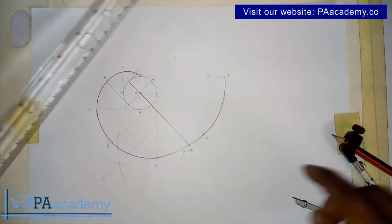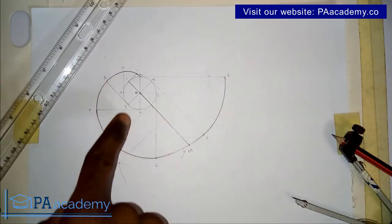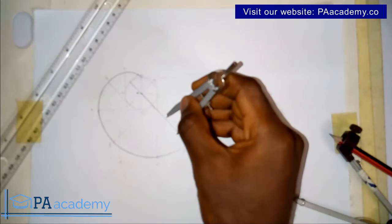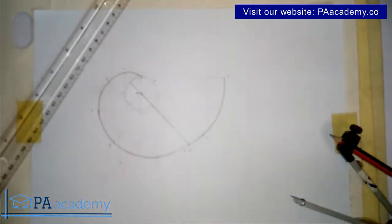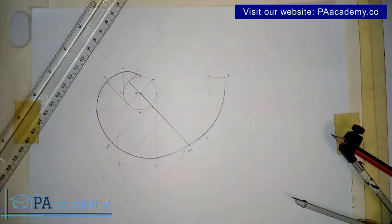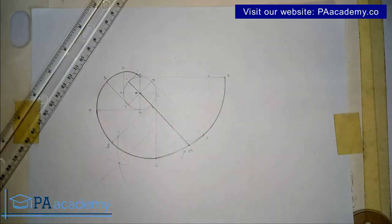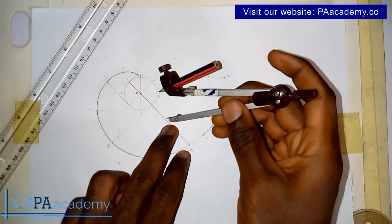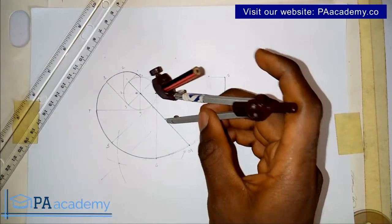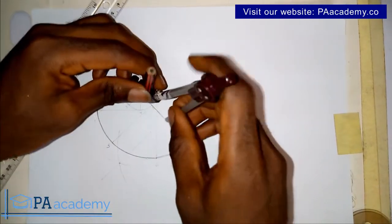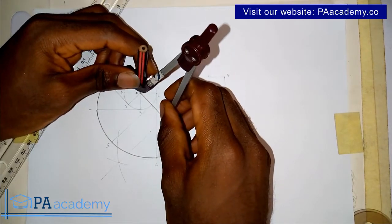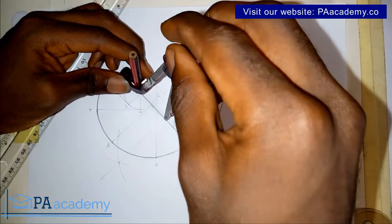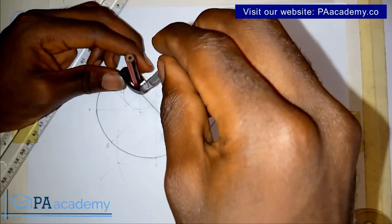I'm going to join the two intersection points together. Where this line touches OM — that point represents the center of the semicircle we are going to draw. I'll bring in my compass again, place it at the center of line OM, and get the radius of the semicircle.